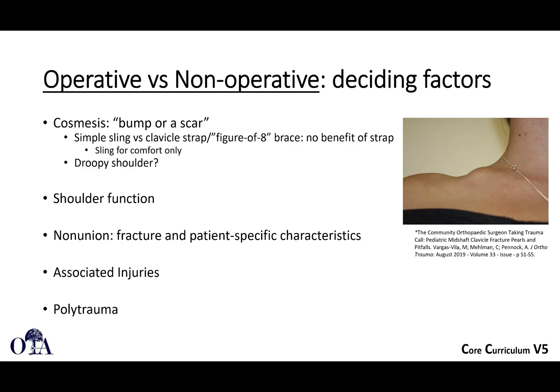You also have to think about shoulder function. Is this a person who has to do a lot of overhead activity? Consider non-union risk — are there factors like fracture gapping, displacement, or patient-specific characteristics that put the patient at significant risk? Associated injuries and polytrauma also matter: a patient with a floating shoulder or multiple other injuries could benefit from operative fixation rather than being in a sling.